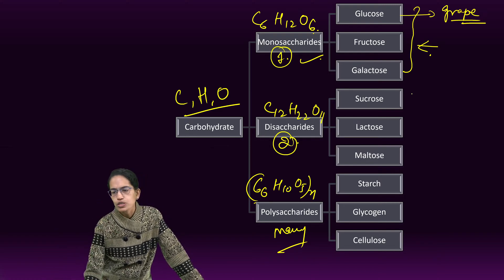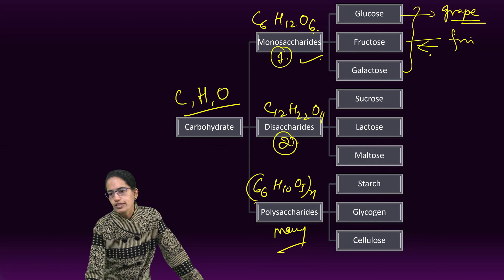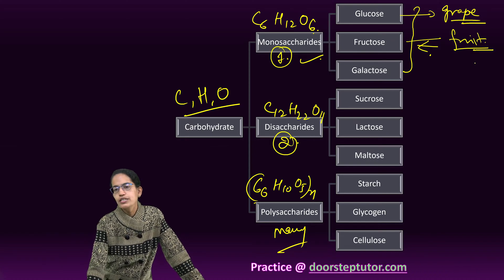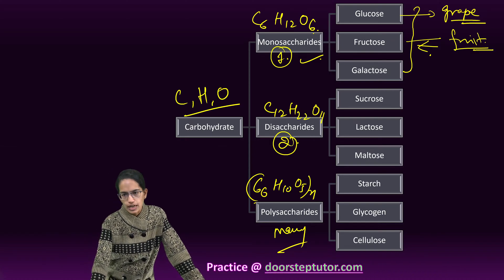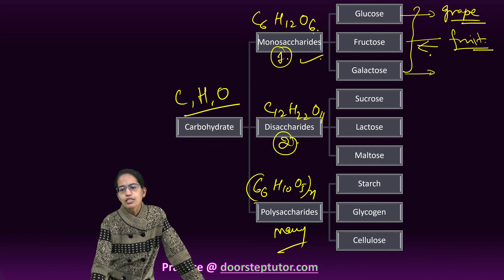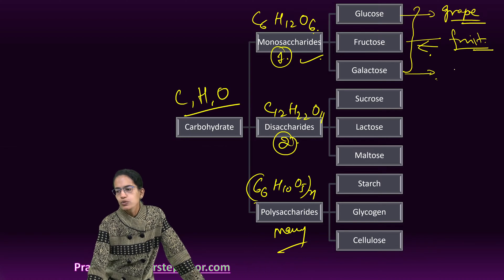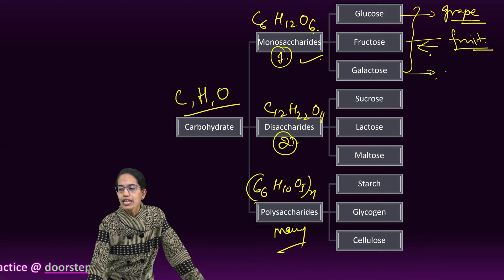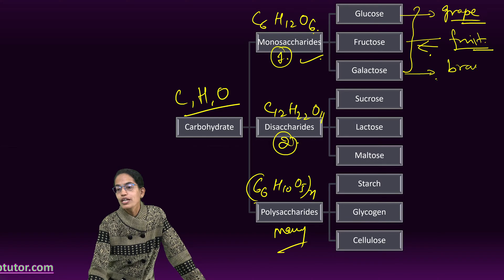The next monosaccharide is fructose. As the name suggests, it is called fruit sugar and is found in ripe fruits and honey. The last one is galactose, which results from the splitting of lactose and is also called brain sugar.